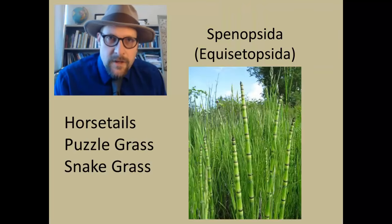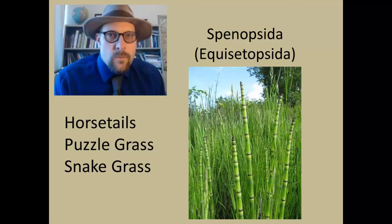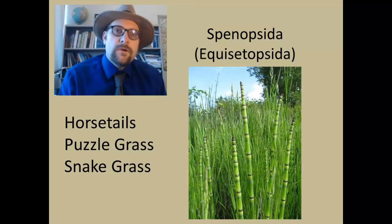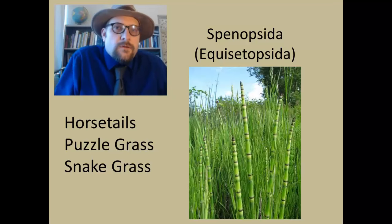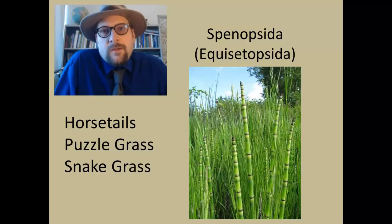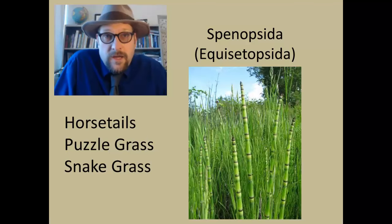You have likely seen a horsetail plant. They often grow in wetlands or near creeks and streams, or along rivers and the edges of ponds. This also goes by the common names of puzzle grass or snake grass.